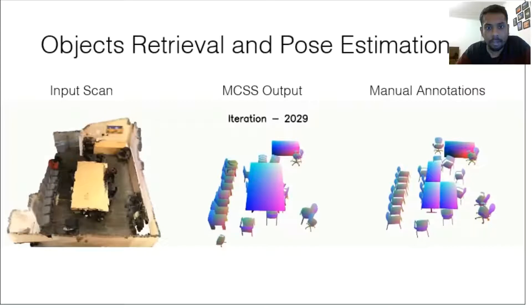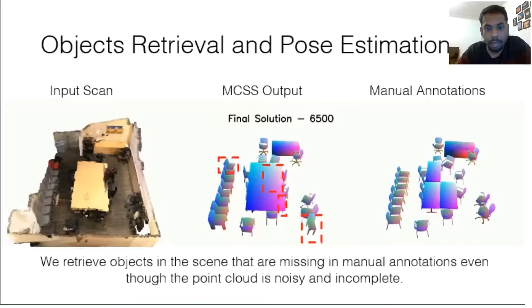Here we visualize MCSS applied to the object tree. We retrieve objects in the scene that are missing in the manual annotations.